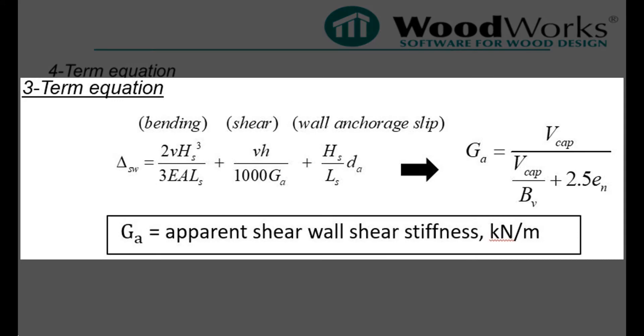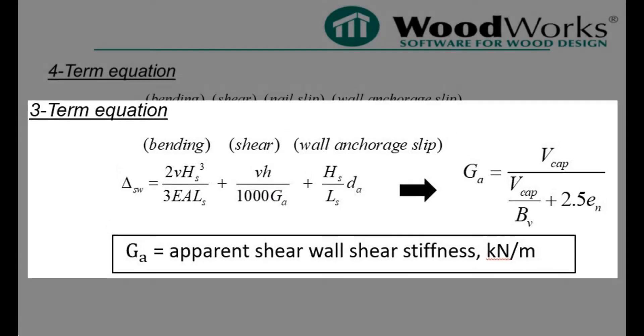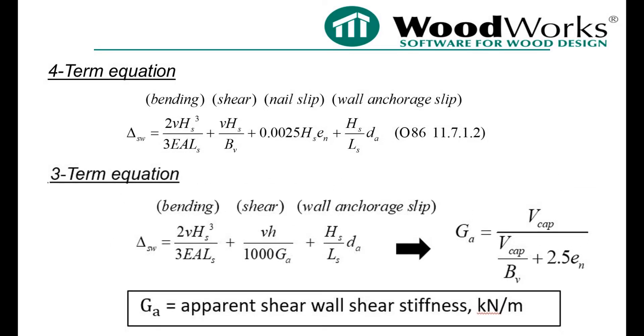This equation makes it necessary to calculate an apparent shear wall shear stiffness, GA, which is dependent on the shear capacity of the shear wall, the shear through thickness of the panel, and the nail slip associated with the nails on the wall. The three-term deflection equation approximates the shear and nail slip component when a shear wall is loaded to 100% of its shear resistance.